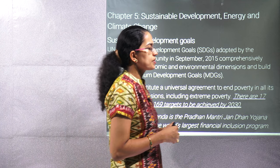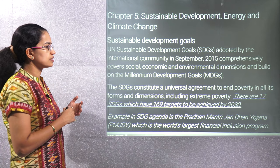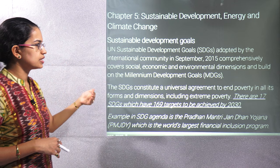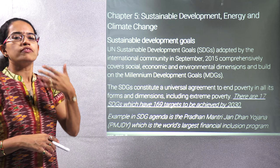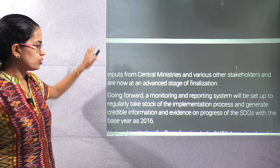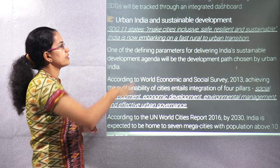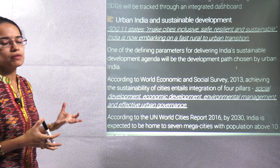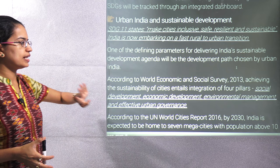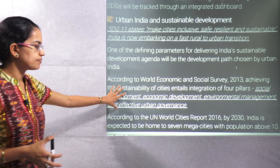Chapters five and six are very important. Chapter five covers Sustainable Development Goals — there are 17 SDGs and 169 targets to be achieved by 2030. Under the Voluntary National Review, India brought focus on seven SDGs. SDG 11 talks about urban India and sustainable development, aiming to make cities more inclusive, safe, and resilient. The focus is on four pillars: social development, economic development, environmental management, and effective urban governance.